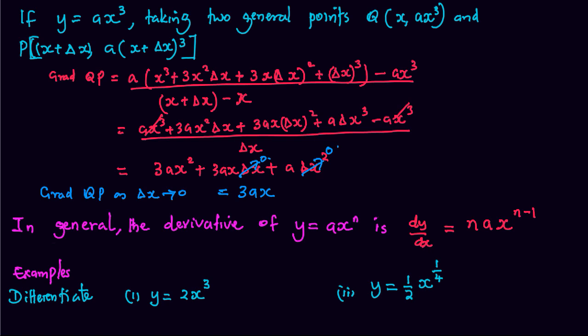Example: differentiate y equals 2x cubed, so we need dy over dx equals 3 multiply by 2x, the power reduces by 1, which gives us 6x squared as dy dx.